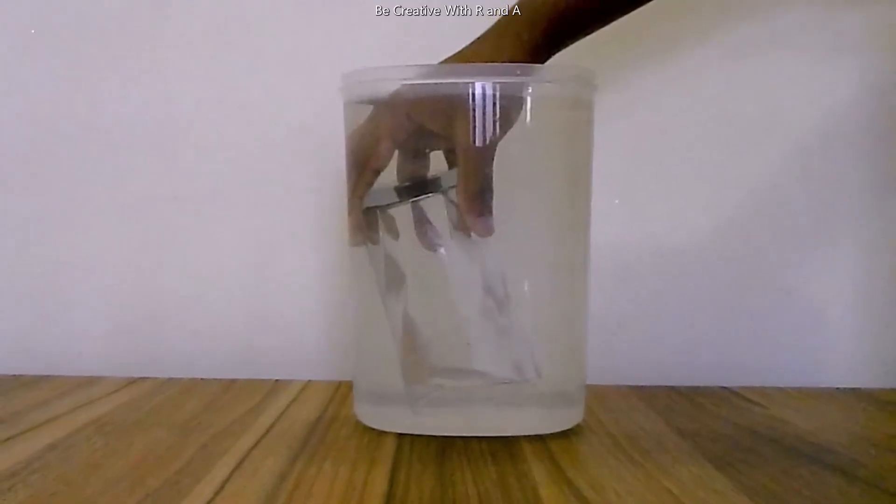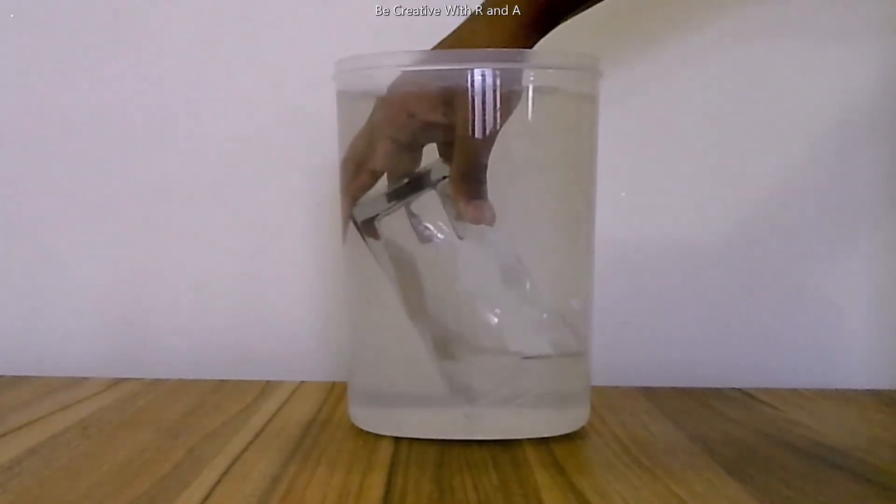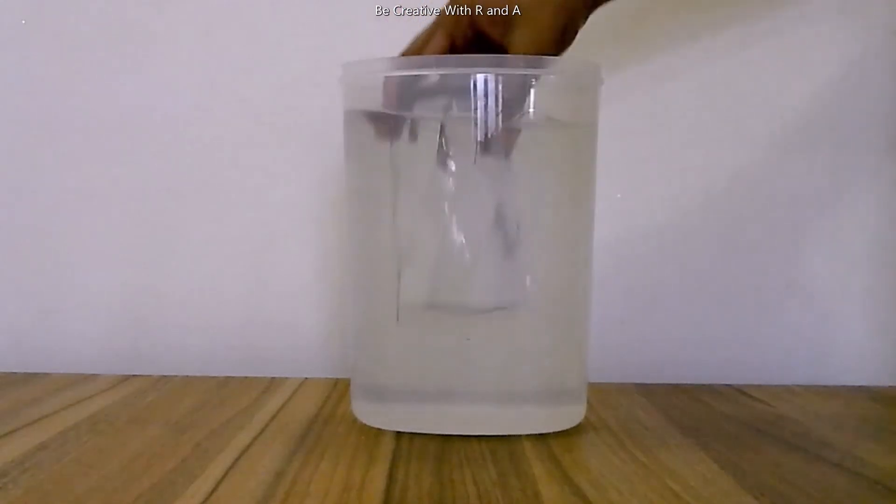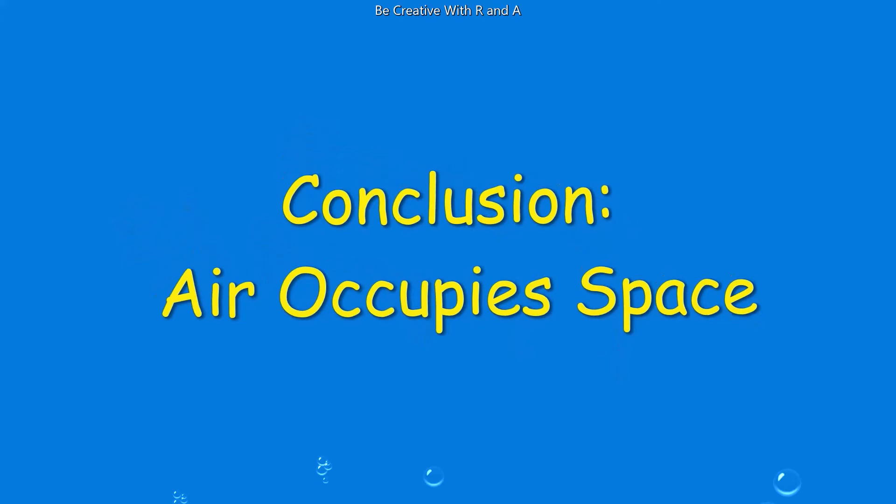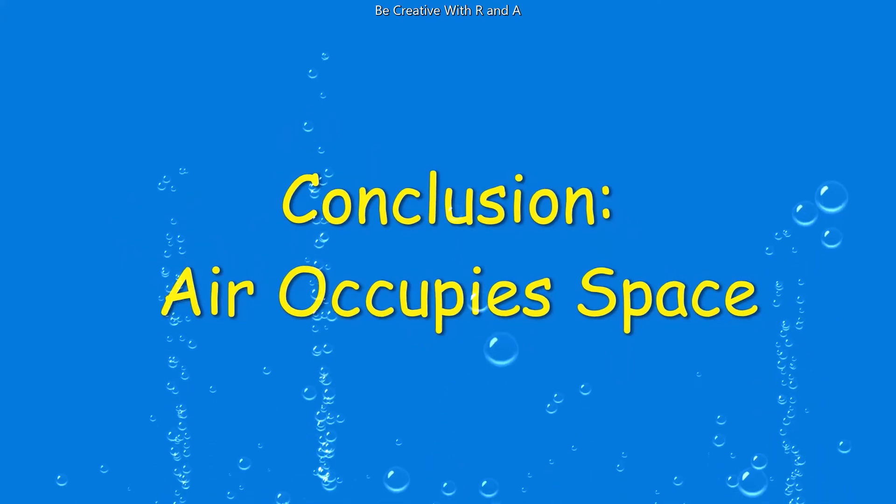But when the glass is in the position as shown in the screen, the air trapped inside the glass comes out as air bubbles and water enters the glass. So we can conclude that air occupies space.